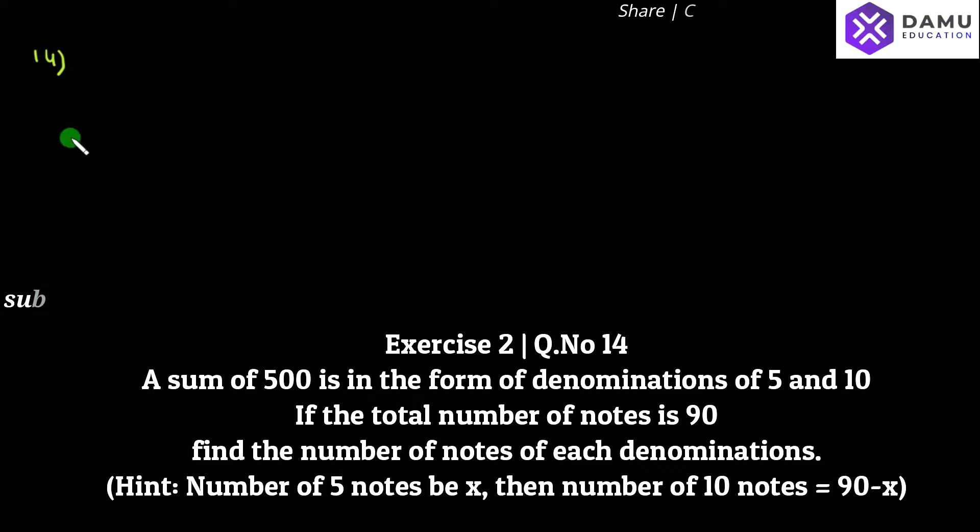A sum of 500 rupees is in the form of denominations of 5 rupees and 10 rupees. If the total number of notes is 90, find the number of notes of each denomination.